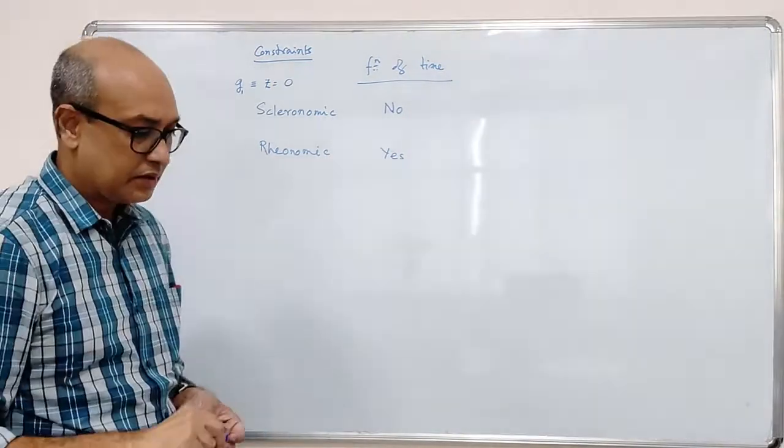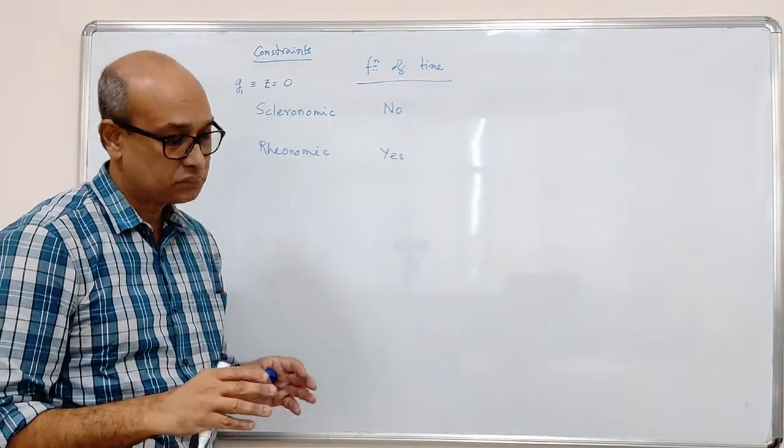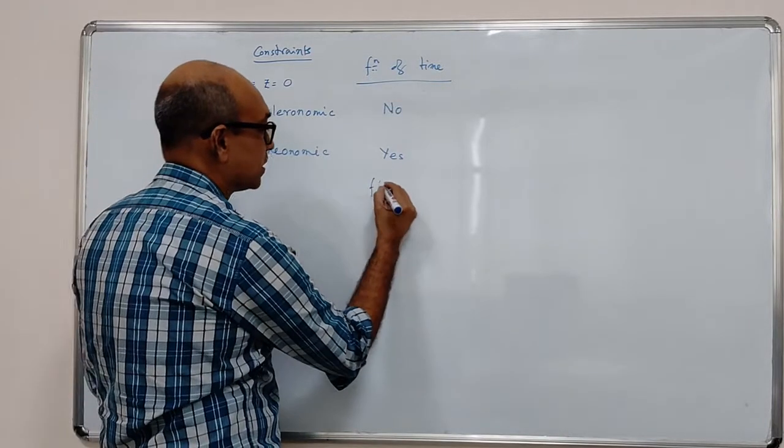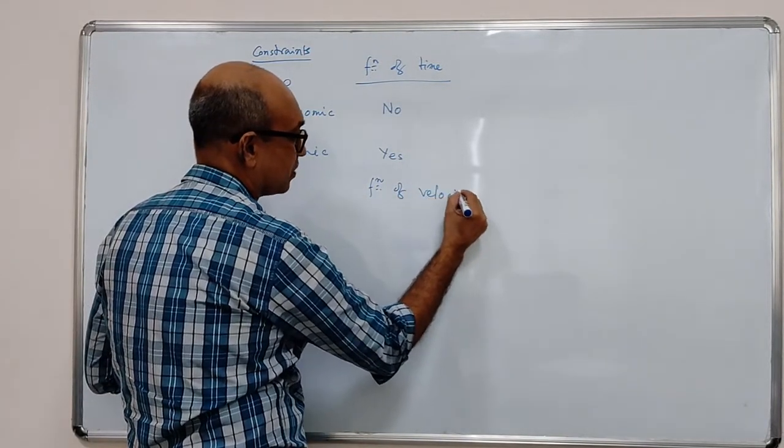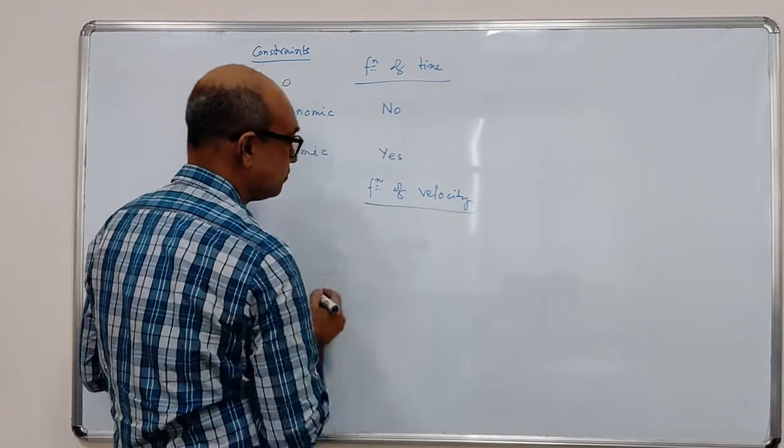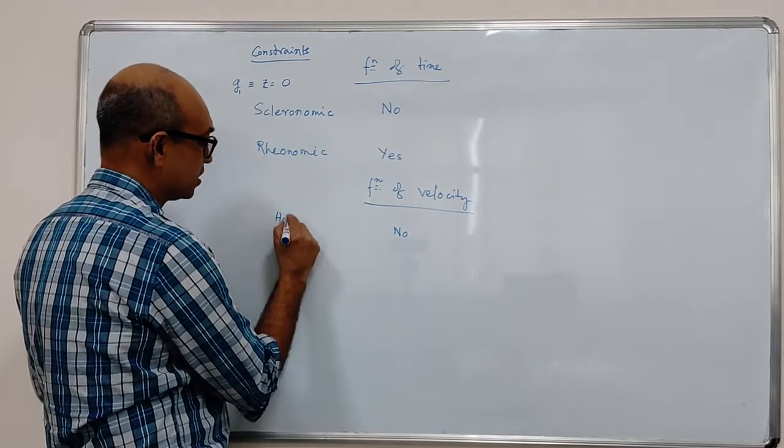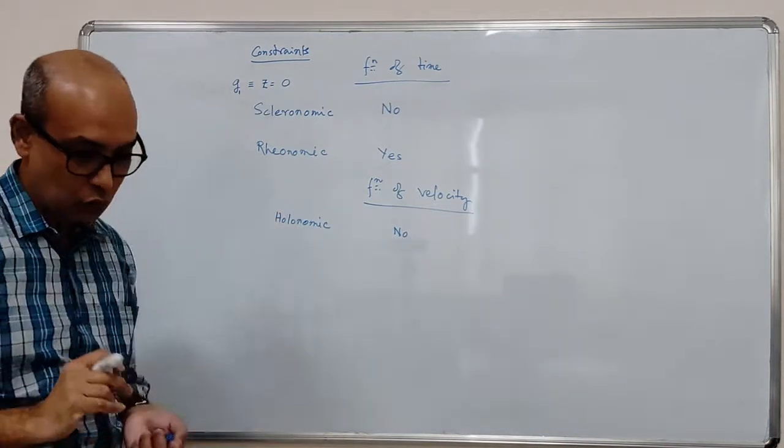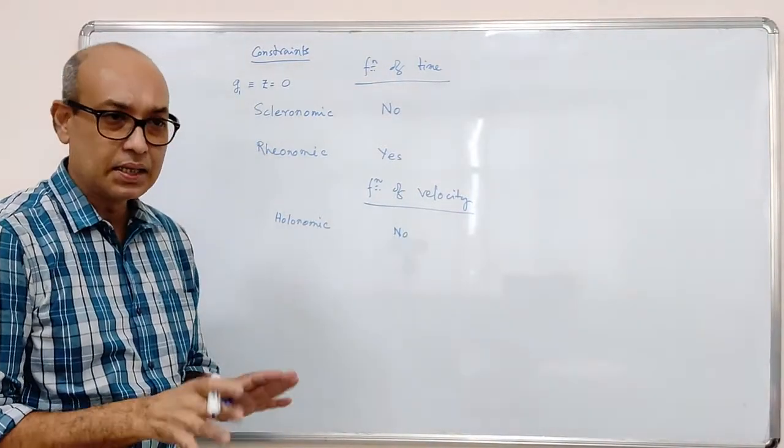The constraints can also be classified based on whether they are a function of velocity. If the answer is no, it is not a function of velocity, such constraints are called holonomic. Holonomic means integrable.